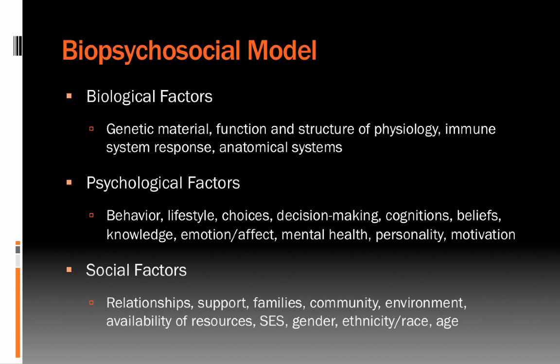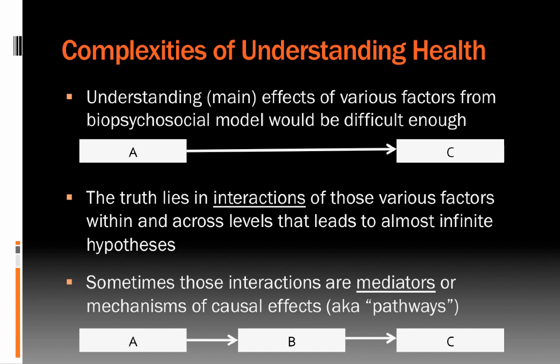The biopsychosocial model adds psychological factors — things that can exist within people, like behavior, choices, and decision-making — but also some larger outside-of-the-person factors as well. And lastly, it includes social factors, which always exist at one level beyond the person. These include relationships, social support, families, communities, physical environments, availability of resources, and demographic factors such as socioeconomic status (SES), gender, ethnicity, race, age, and disability.